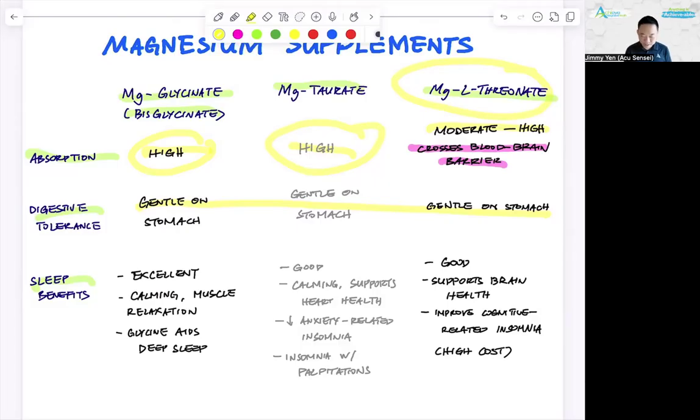Sleep benefits. Here's the difference of these magnesium supplements. Magnesium glycinate, what is the main difference? It's excellent. Magnesium short answer right now, if you're looking for just improved quality of sleep, magnesium glycinate is your choice. It's excellent. It has a calming effect, muscle relaxation, and this form of magnesium is attached to an amino acid called glycine. Glycine, this amino acid aids in deep sleep. That's why this is your number one choice. You would typically want to start here in regards to helping your insomnia. Magnesium taurate, it's good, not excellent. It has a calming and supports heart health. It decreases anxiety related insomnia. So if you have insomnia with anxiety and palpitations, magnesium taurate could be a good choice. But it's not excellent in the sleep benefit compared to magnesium glycinate.